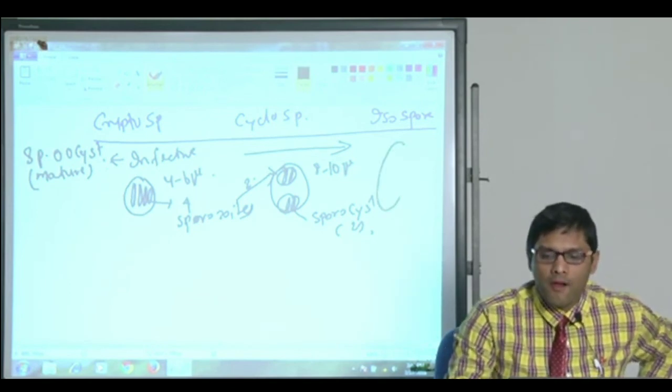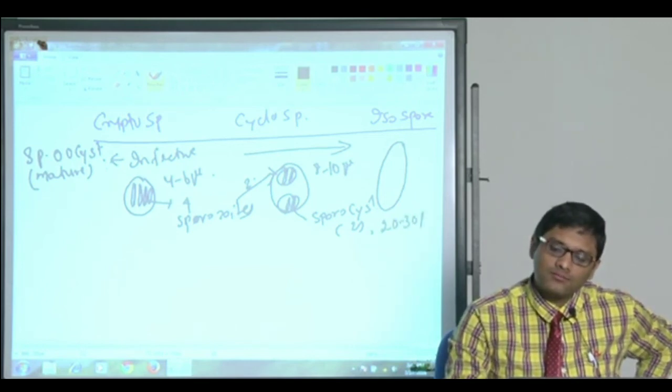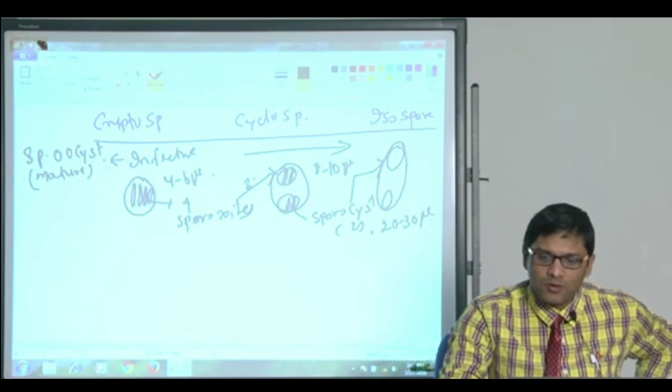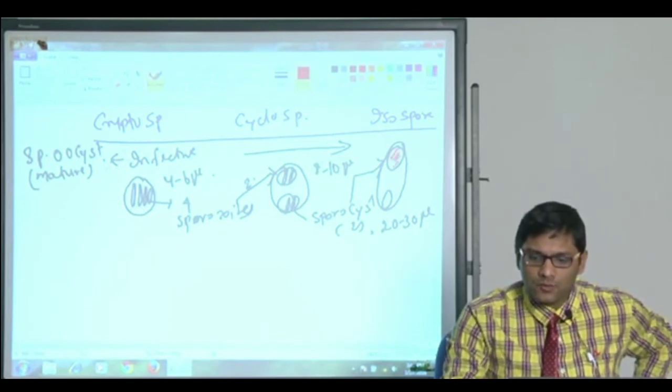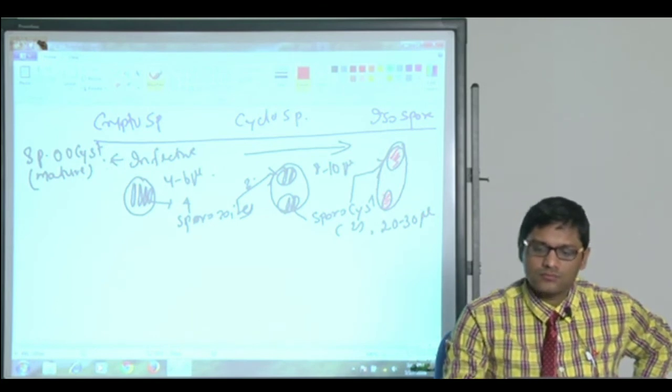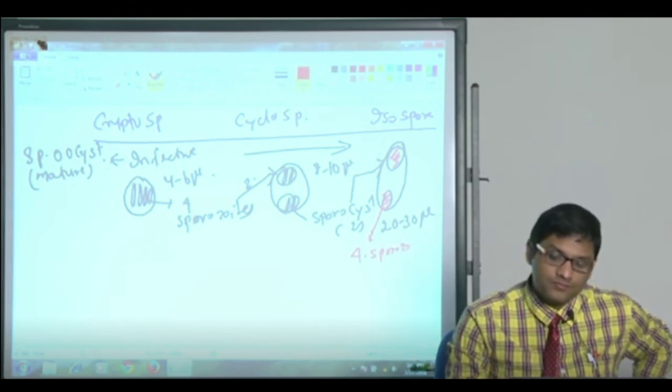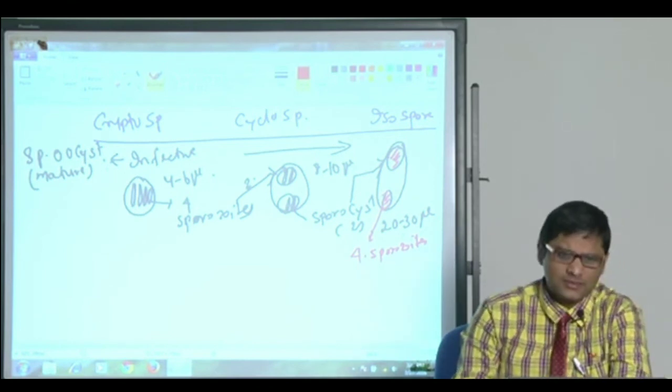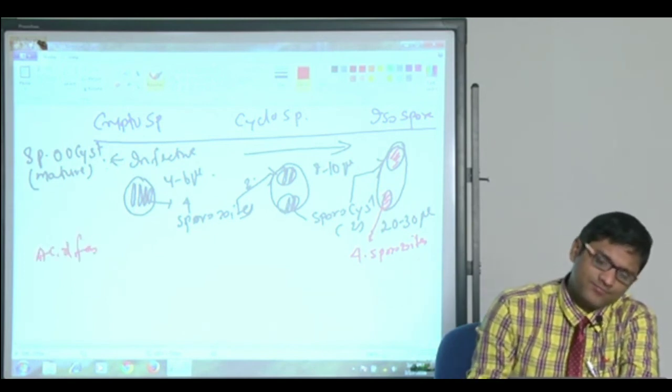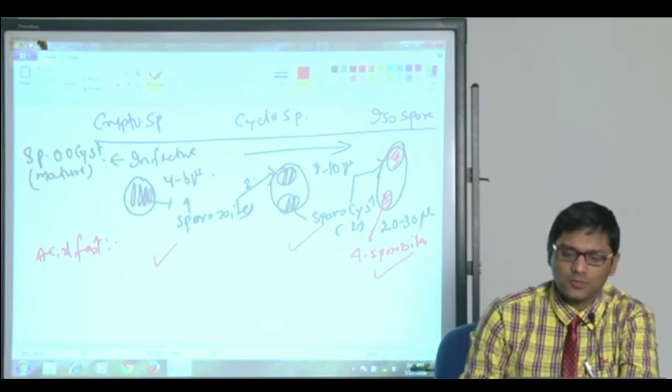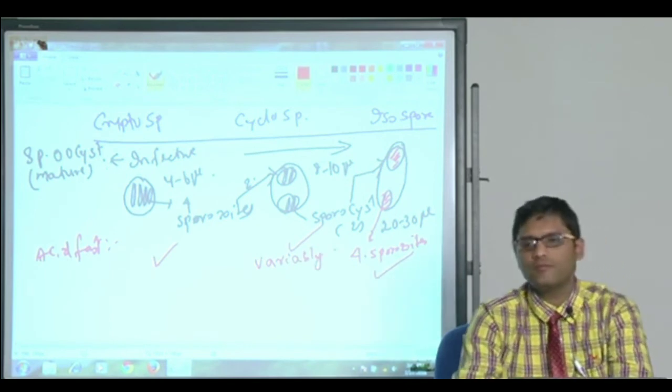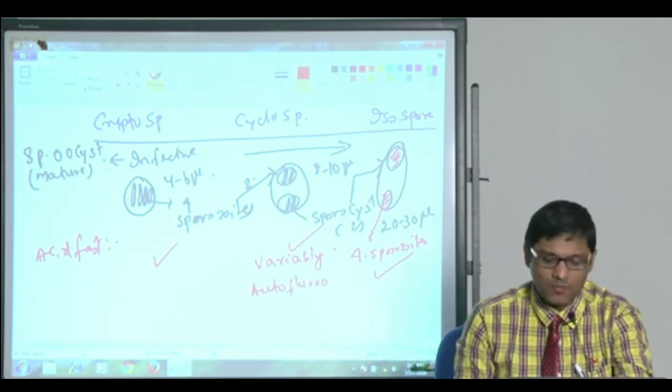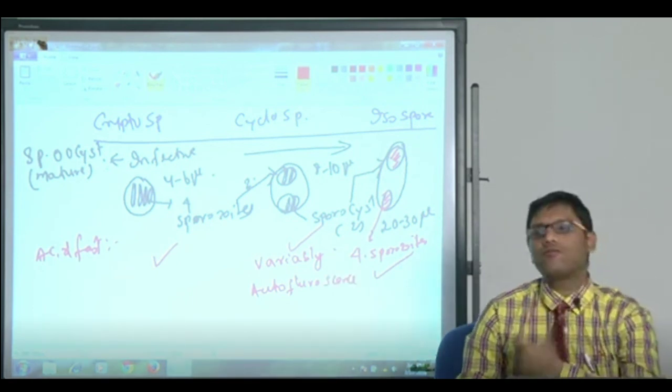Isospora is oval, 20 to 30 microns, contains again 2 sporocysts. Each sporocyst contains 4 sporozoites, 4 sporozoites. This description is very important, very frequently asked. Among these, all the oocysts are acid fast, however, Cyclospora is variably acid fast, and Cyclospora oocyst has a property of autofluorescence also.